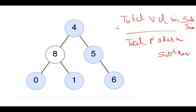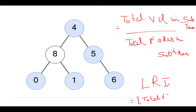For this we will be using post-order traversal — we will first go into the left subtree, then the right subtree, followed by the node itself: left, right, then node. At each traversal we will be returning two things: the total value that exists in that subtree, and the total number of nodes.